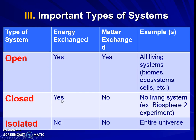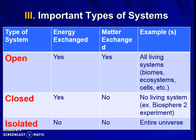Closed systems, on the other hand, allow energy to enter but matter cannot. Living things aren't really great at being closed systems because we need more matter over time. Closed systems don't really occur in nature — we as humans sometimes make them. Isolated systems don't exchange energy or matter at all; the only example we think of is the whole universe, since nothing comes in or out of everything.